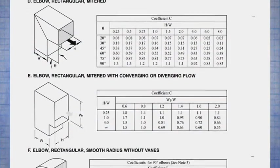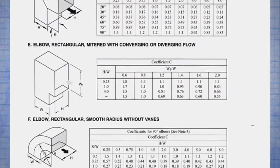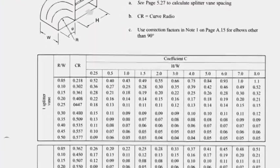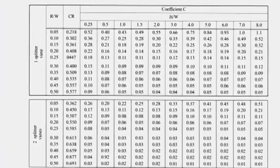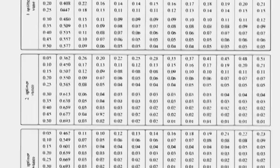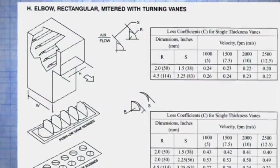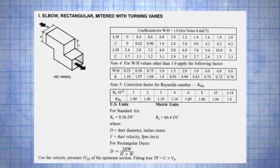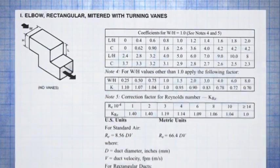These drawings illustrate the fitting types that will be demonstrated and discussed within this video presentation. The drawings were taken from the appendix of SMACNA's HVAC System Duct Design Manual. The data associated with each fitting provides loss coefficient values that can be used to develop the pressure loss contribution of each fitting.